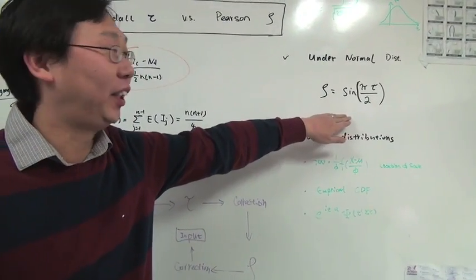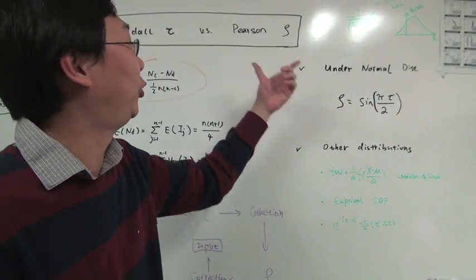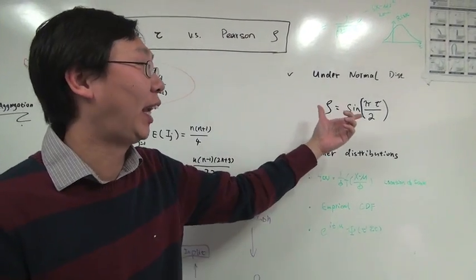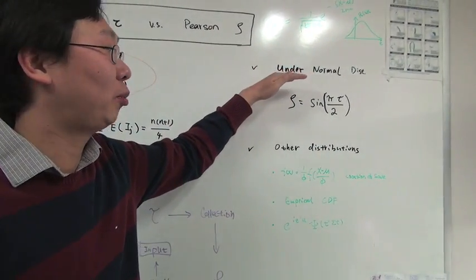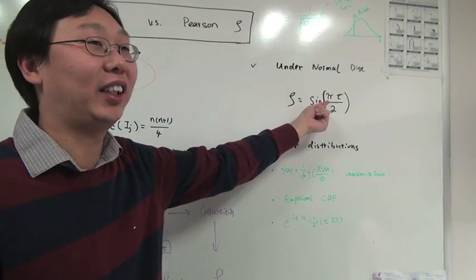In this equation, we have the relationship between the Pearson correlation and the Kendall tau correlation under the normal distribution assumption. You see Pi exactly sitting here.